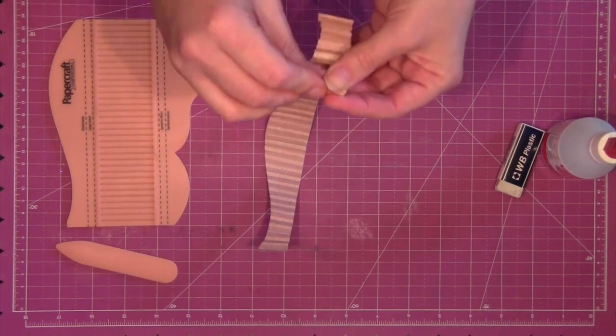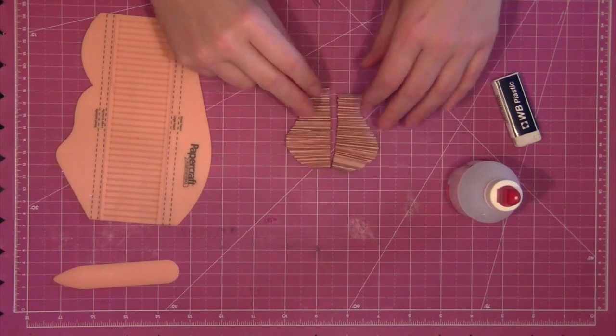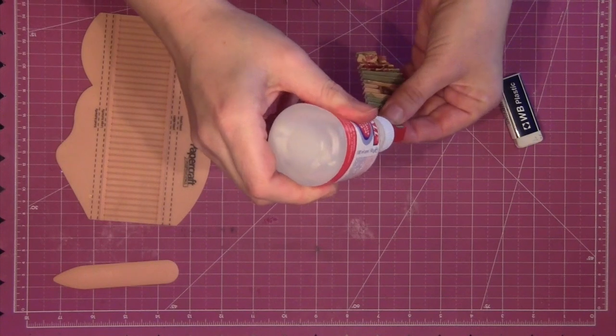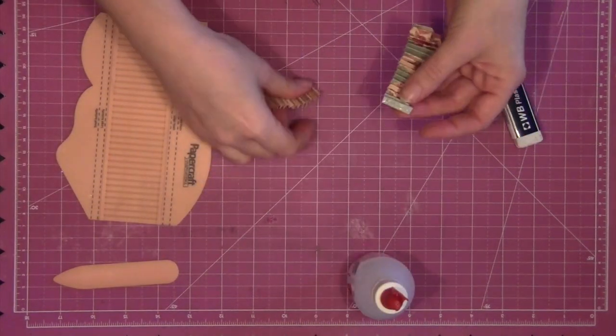Repeat this for the second strip so you have two mirror image mountain and valley folded paper strips. If you place them side by side you can start to see how the heart rosette is going to come together.